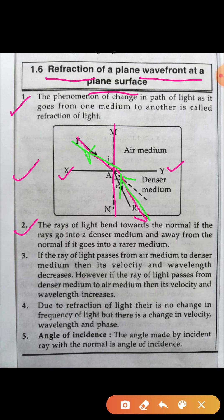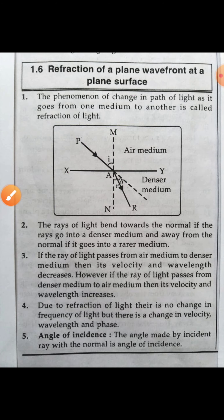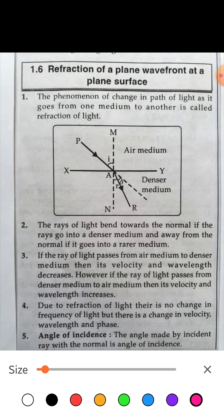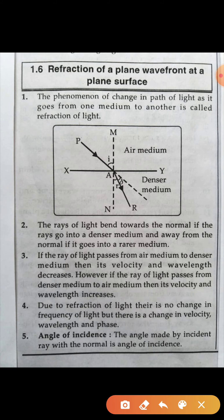When light passes from rarer to denser, it shifts toward the normal, and when it passes from denser to rarer, it shifts away from the normal. If the rays of light pass from rarer to denser medium, then its velocity and wavelength decrease.